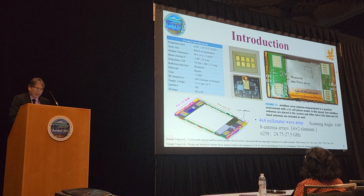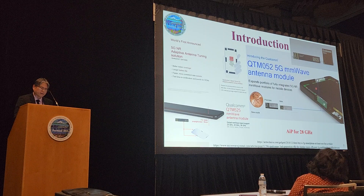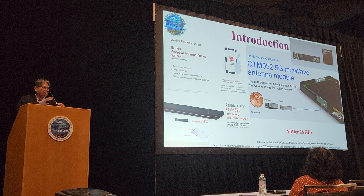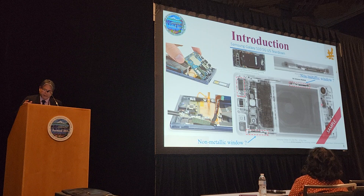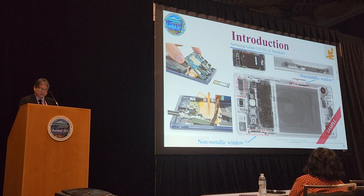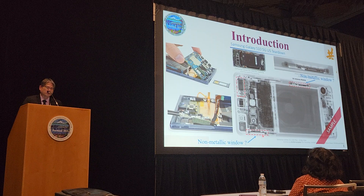Looking at the Qualcomm AIP, when they introduced their first product — the QTM052 — you can see they tried to cut a window to display the antenna performance. From X-ray pictures of the Samsung Galaxy S10, you can see there is a non-metallic window. For all current 5G millimeter wave antennas, you have three sets of modules: two on the sides, one here and the other around the corner lying flat.